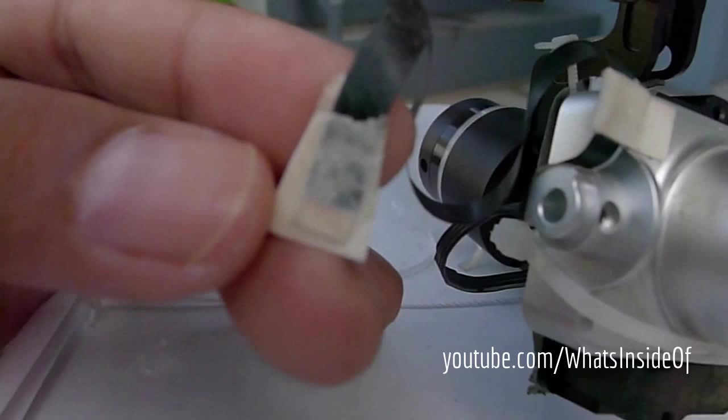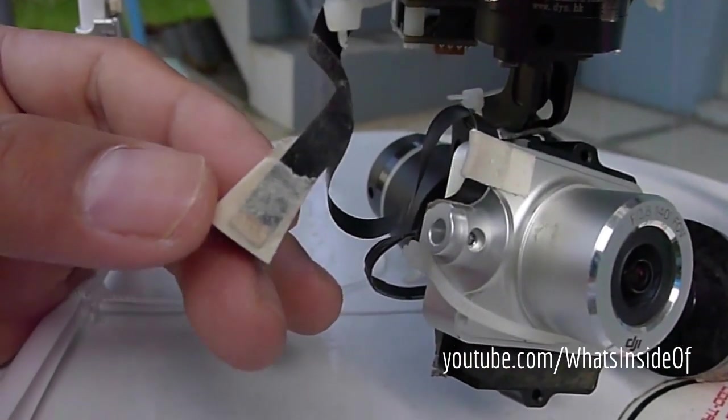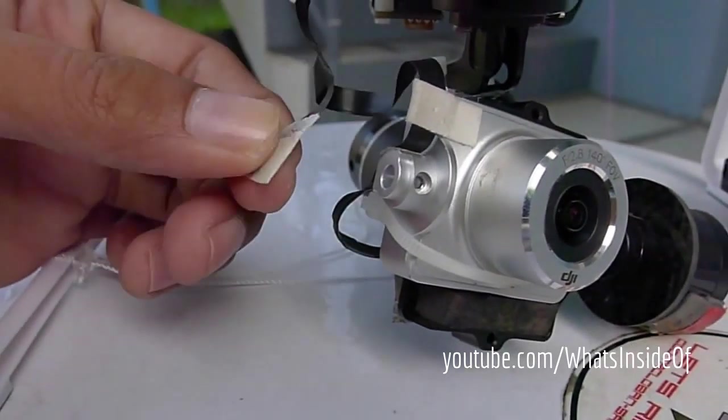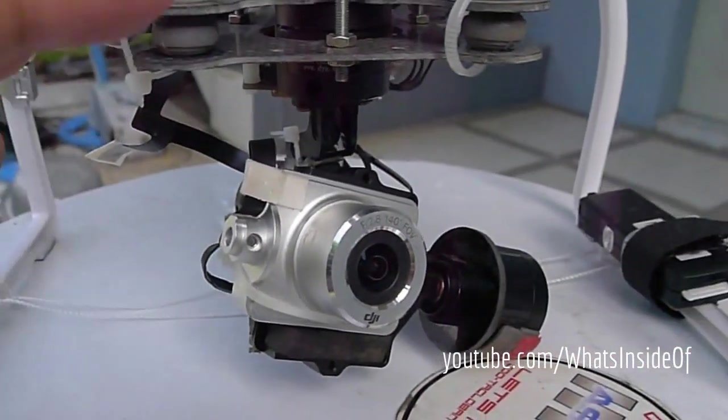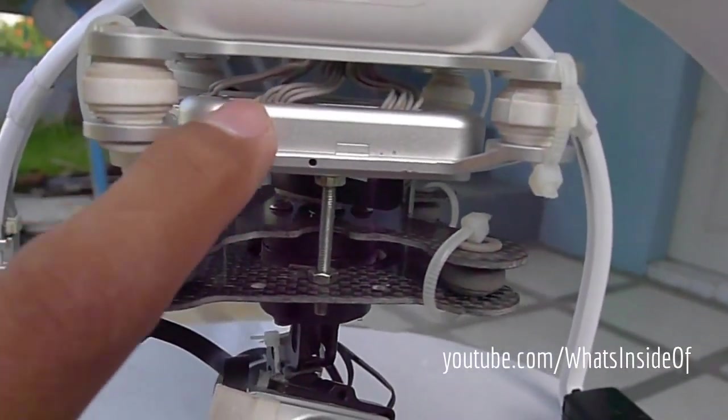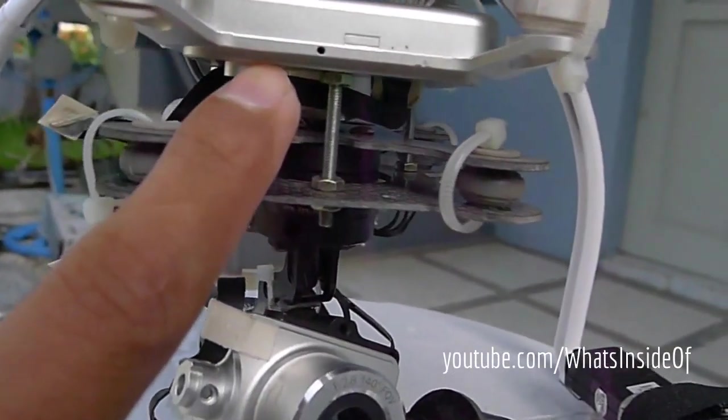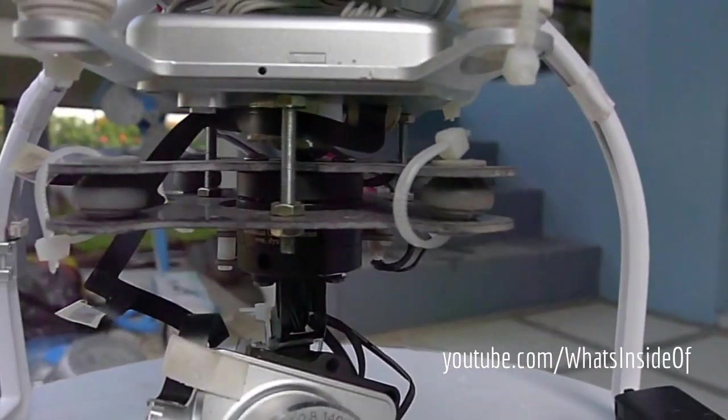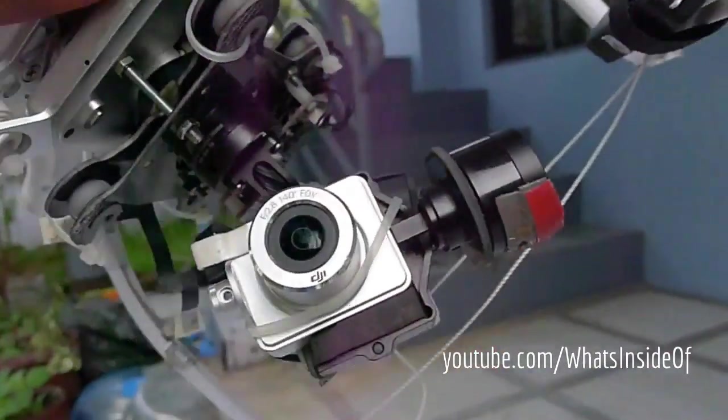As you can see here, I covered the flat ribbon cable with masking tape to protect the conductors. So once you remove everything from the main IMU control board of the gimbal, you need to drill three holes for the bolts.